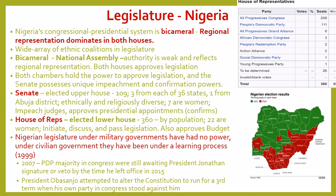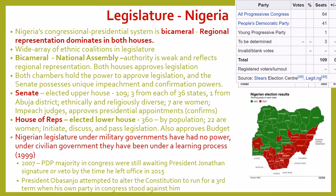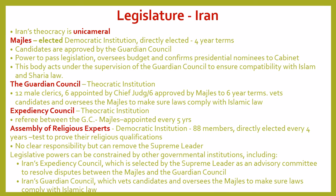Last but not least is Iran. Iran is our second unicameral legislature alongside China. Their legislature is called the Majlis, and members are directly elected to four-year terms. However, candidates are approved ultimately by the supreme leader, more specifically by the Guardian Council. The Majlis has the power to pass legislation, oversee the budget, and confirm presidential nominees to the cabinet. But this body acts under the supervision of the Guardian Council, which ensures that anything passed is in compliance with Islam and Sharia law.